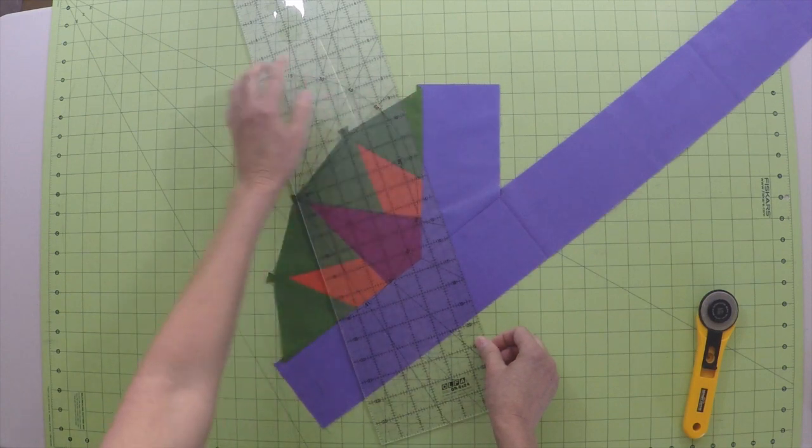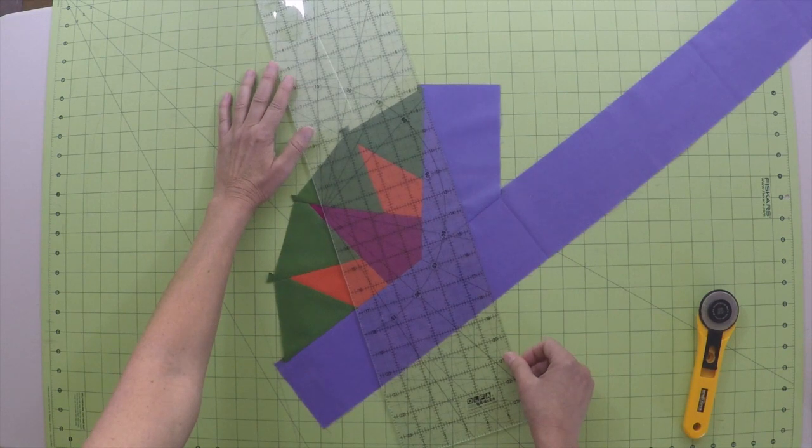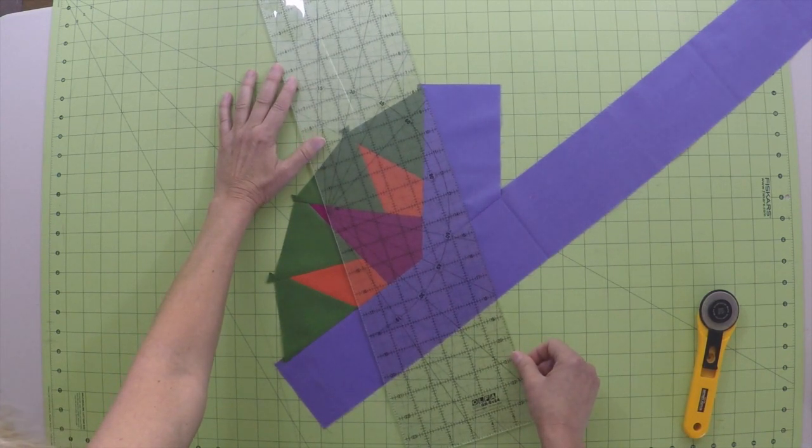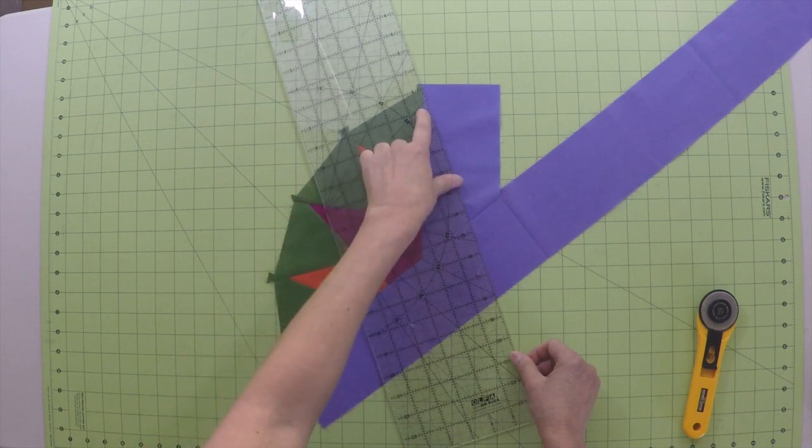Then the side of your ruler should be a quarter inch from the pin marker at the top of point 3. Adjust your ruler so that both of these marks line up and make your first cut.